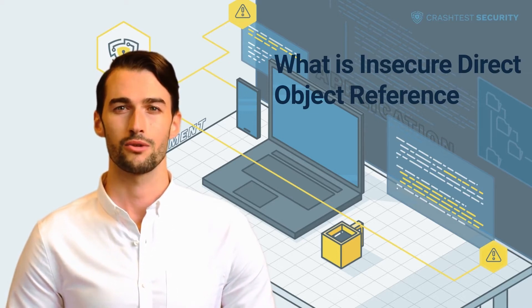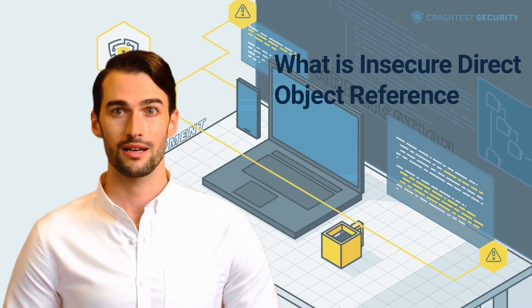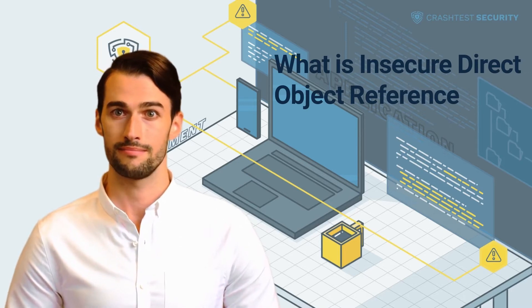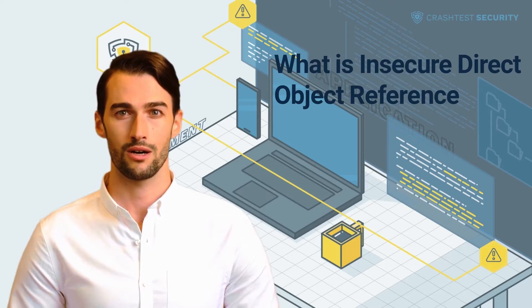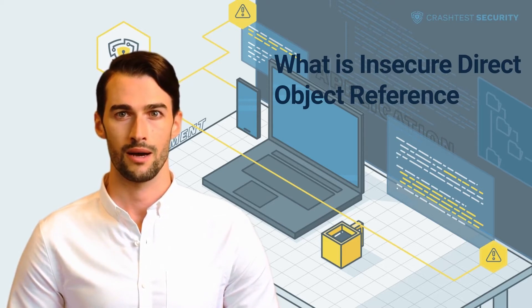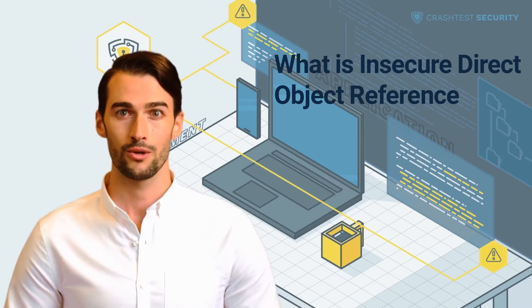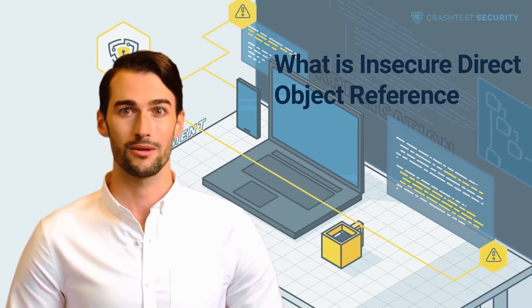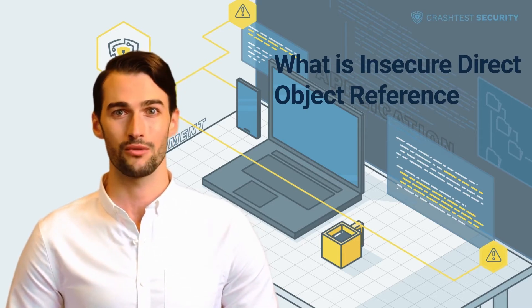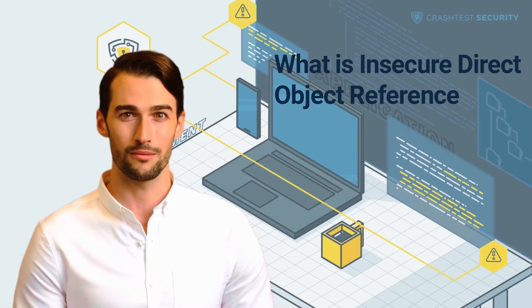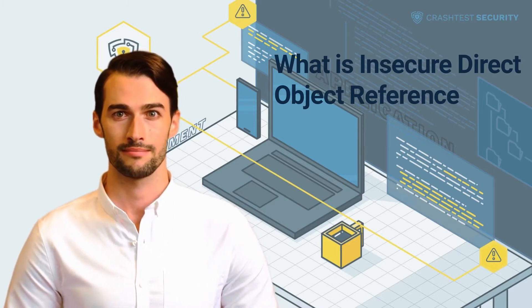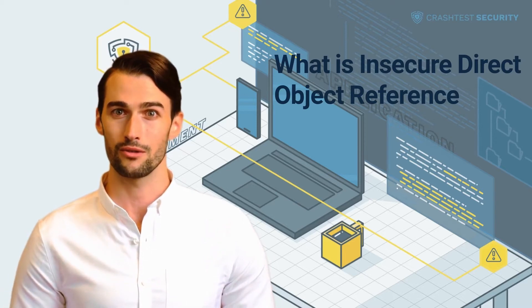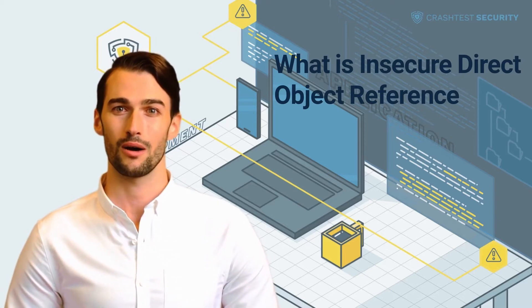In the worst case, users' sensitive personal and financial details can also be compromised. The insecure direct object reference vulnerability arises as a consequence of three security gaps: a client can alter user-supplied input, such as form or URL parameter values, to modify an object reference; the web server exposes a direct reference to an internal operation or object; and the application lacks sufficient authorization checks for access to internal objects.